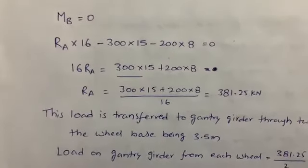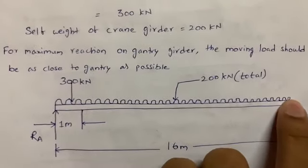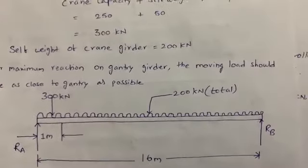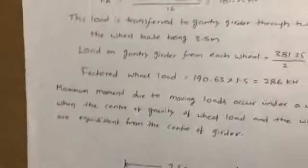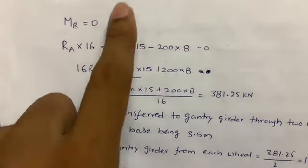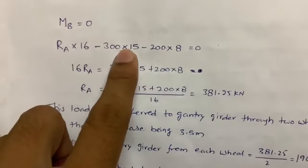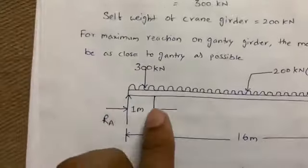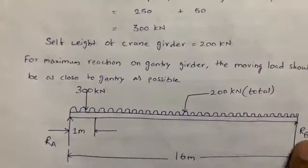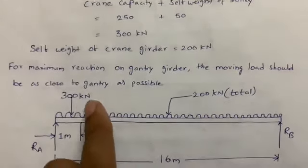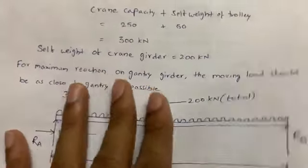Taking moment at B, the moment is zero at that point. The formula is force into perpendicular distance. RA into 16 is clockwise (positive); minus 300 into 15 is anti-clockwise; and 200 into 8 is also anti-clockwise — since 8 is half the span (16 m), and 15 is the perpendicular distance of the 300 kN load from B.